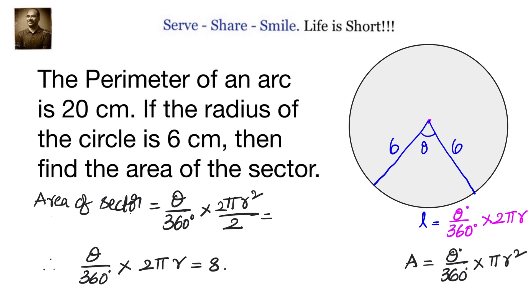So that in the next step I can write it as theta by 360 into 2 pi r into r by 2 which is nothing but l into r by 2. But we know l is equal to 8 centimeter so it will be 8 into r which equals 6 by 2, that is 24 centimeter square.